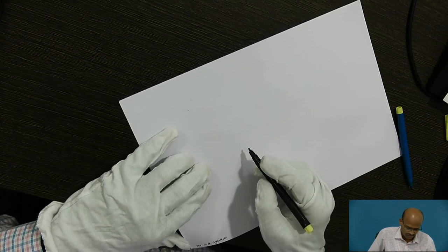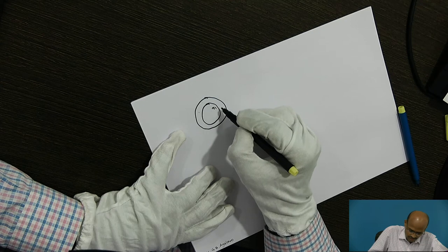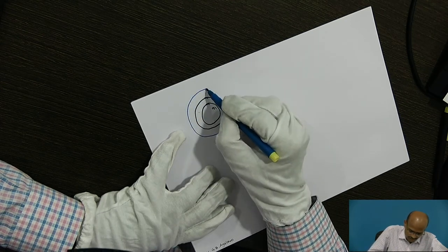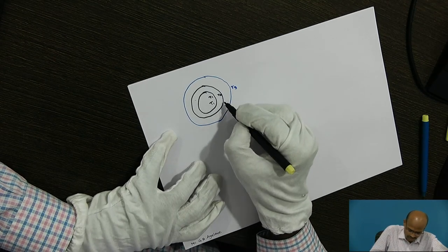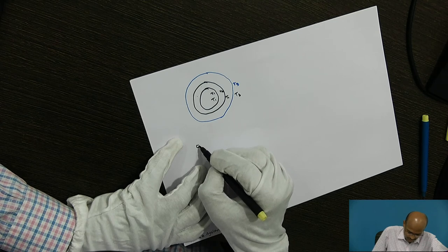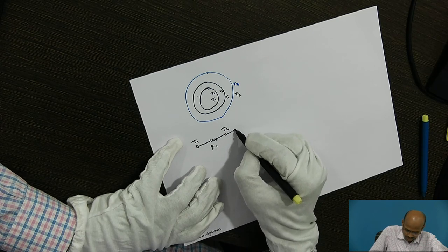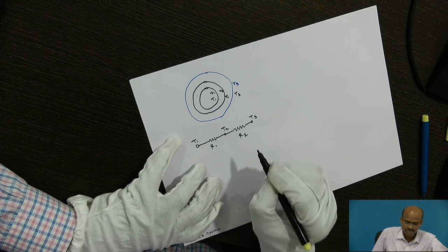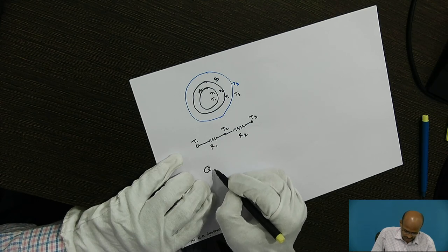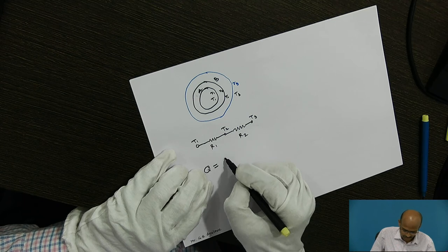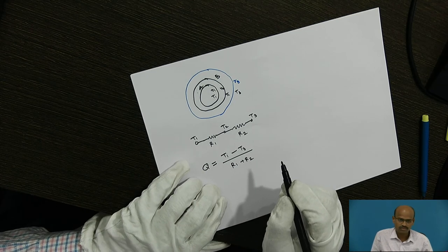The second case is the composite cylinder. Suppose this is a pipe having inner radius R1 and outer radius R2, which is insulated with an outer radius R3. The temperatures are T1, T2, and T3. The thermal network for the composite cylinder has a first resistance between T1 and T2, and a second resistance between T2 and T3, where this is material A and this is material B. The conductive heat transfer rate equals T1 minus T3 divided by R1 plus R2.